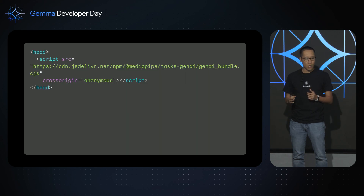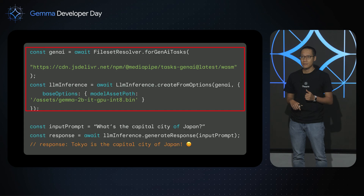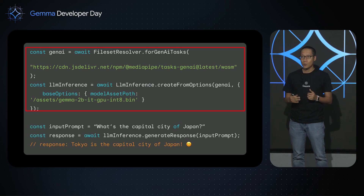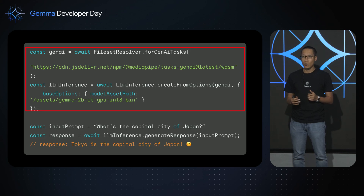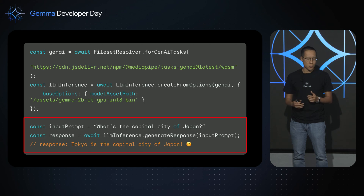Then you switch to your HTML file and add these lines to load the MediaPipe LM Inference API. Next, go to your JavaScript file. We start by creating an LM inference instance with the Gemma model you just downloaded from Kaggle, and then we give it a prompt and get back the generated response. It's very easy, isn't it?